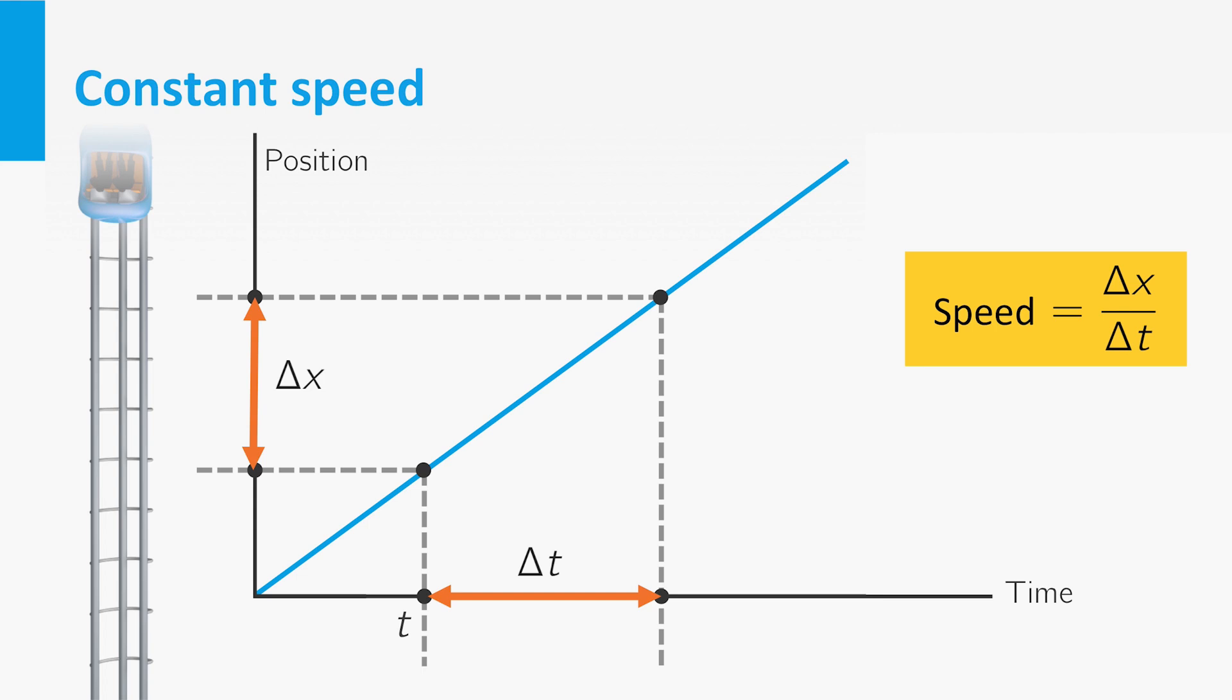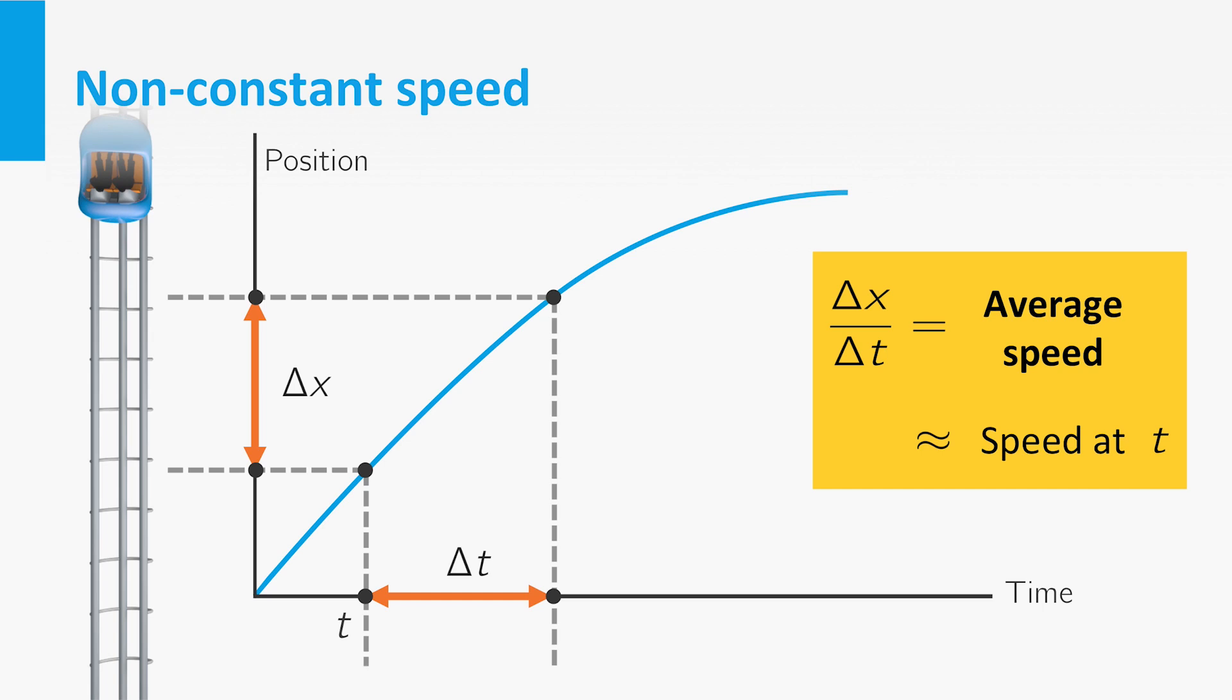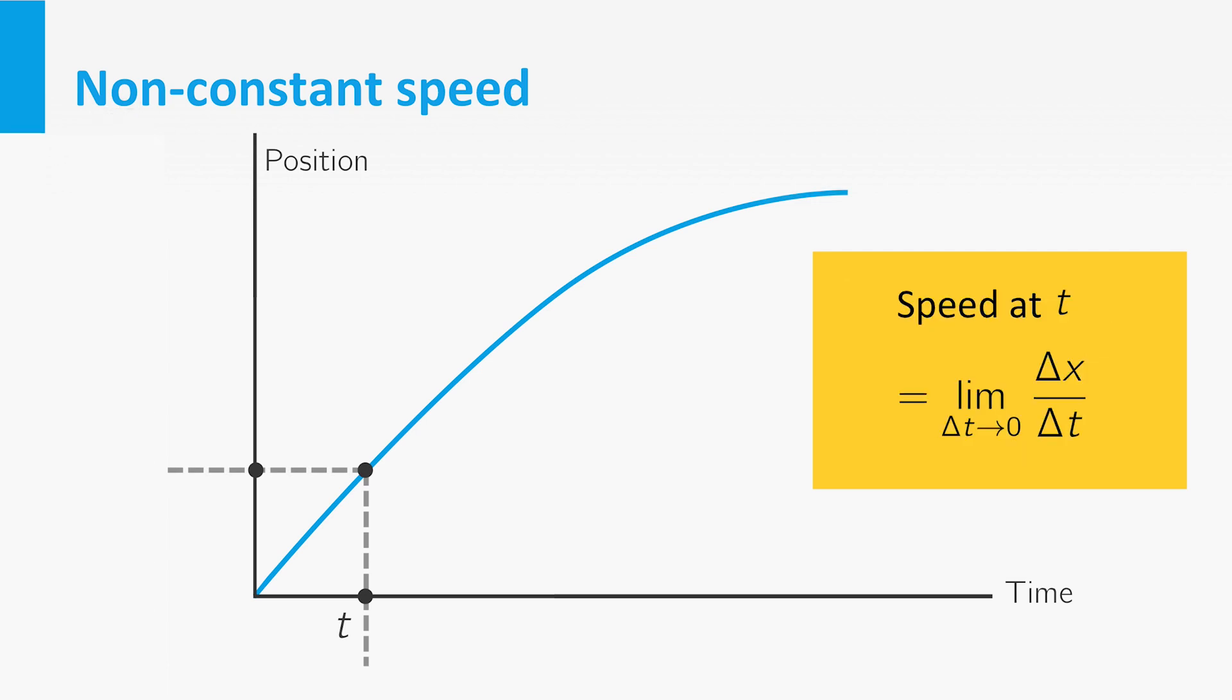Now suppose that the speed is not constant, and we want to determine the speed at time t. Again, we can measure the distance delta x travelled during a time interval delta t, and then take the quotient. This will give us the average speed on the time interval, but not the speed at time t. However, if the time interval is small, the speed is approximately constant during the time interval. So the speed at time t is approximately equal to delta x divided by delta t. To make the approximation better, we take delta t smaller and smaller. The quotient of delta x and delta t then approaches some limit value, the speed at time t.